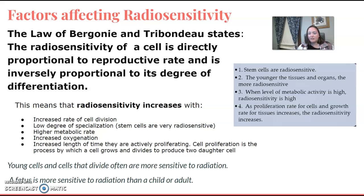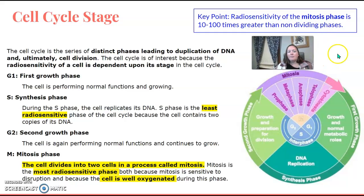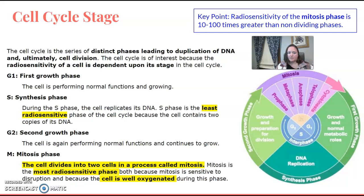A fetus is more sensitive to radiation than a child or an adult. The cell cycle stages have distinct phases leading to the duplication of DNA and ultimately cell division. G1 is the first growth phase, S is the synthesis phase and is the least radiosensitive phase, and G2 is the second growth phase.